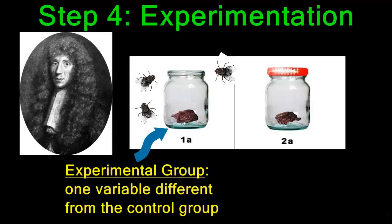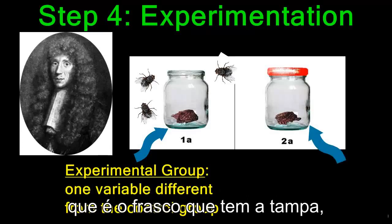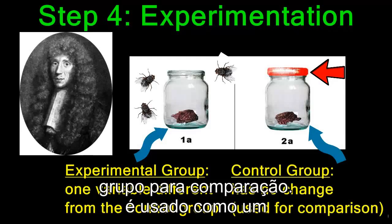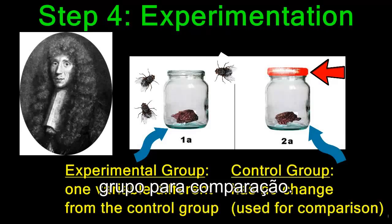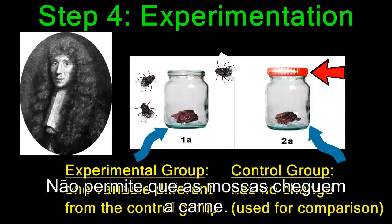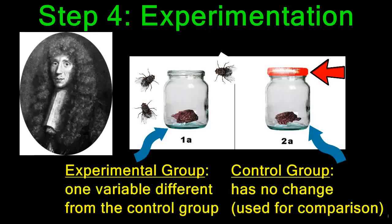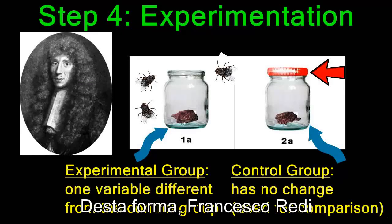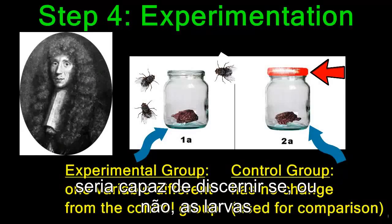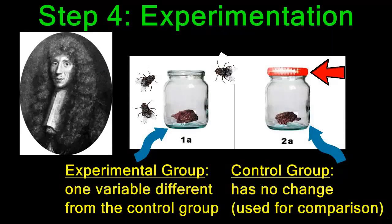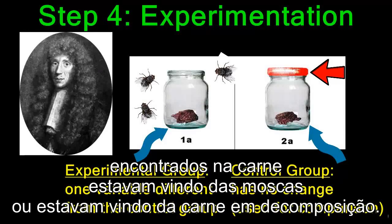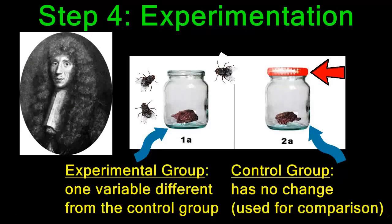The control group, which is the jar that has the lid, is used as a comparison. It does not allow the flies to get to the meat. This way, Francesco Redi would be able to discern whether or not the maggots in the meat were coming from the flies or from the meat.